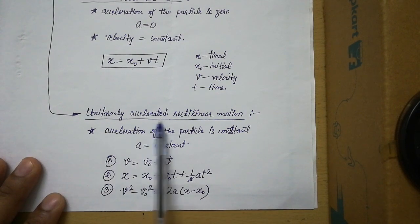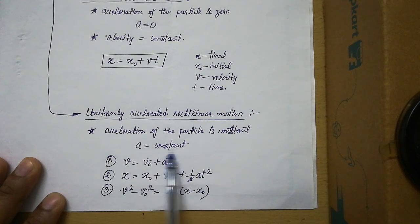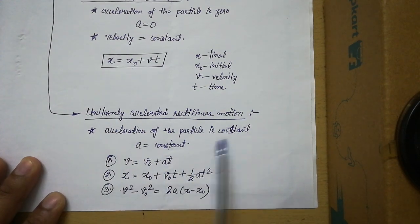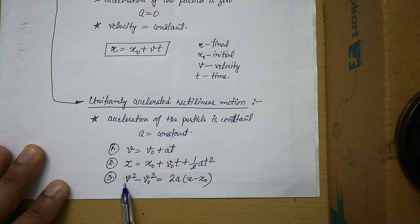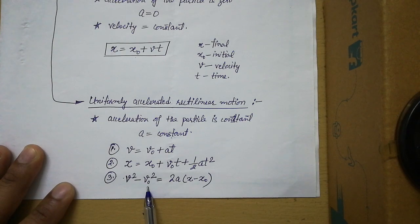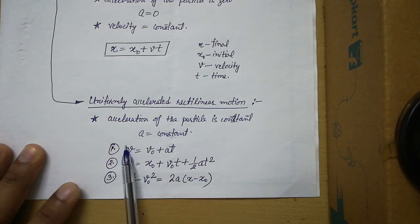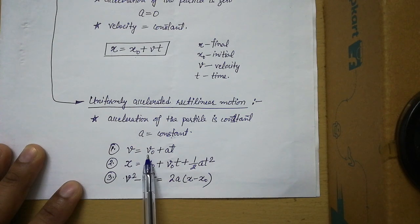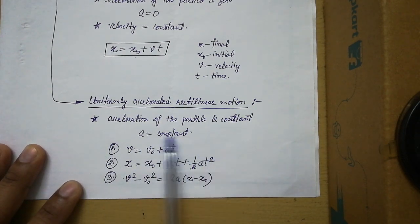The next part is uniformly accelerated rectilinear motion. In this type of motion, the acceleration of the particle is constant. Under this topic we have three equations: v = v₀ + at; x = x₀ + v₀t + ½at²; and v² - v₀² = 2a(x - x₀). These equations are not new — you have already learned them as v = u + at, s = ut + ½at², and v² - u² = 2as in your previous classes.